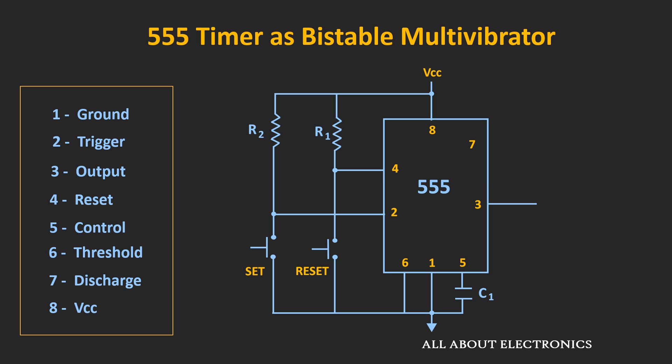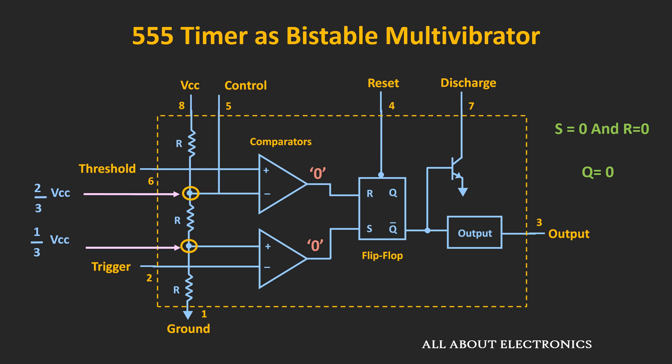By default, this trigger pin is connected to the supply voltage, so the voltage at pin number 2 will be more than the reference voltage, and hence the output of the second comparator will also be equal to logic low. So initially, S and R are both zero, which means the flip-flop will retain its previous state. And whenever the circuit is just turned on, Q will be equal to zero, so the output of the 555 timer will also be equal to logic low.